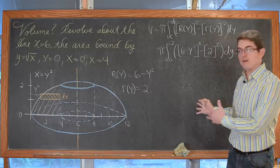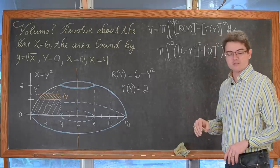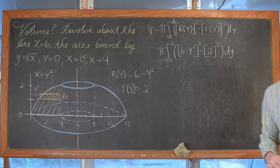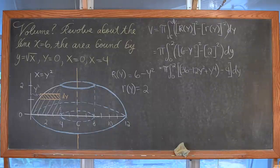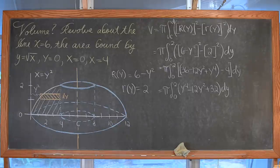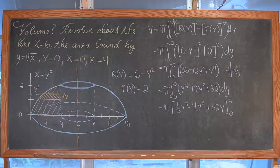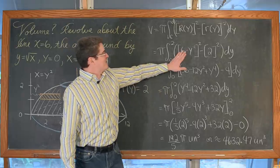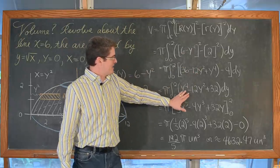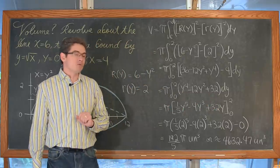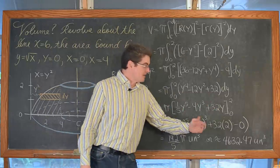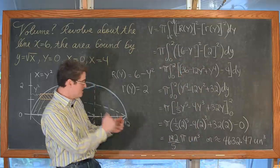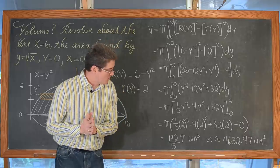Stepping off and revealing the solution: taking the binomial, squaring it, combining like terms, integrating, and evaluating the definite integral — the volume of this solid equals 192 over 5 pi cubic units, or approximately 4,632.47 cubic units.